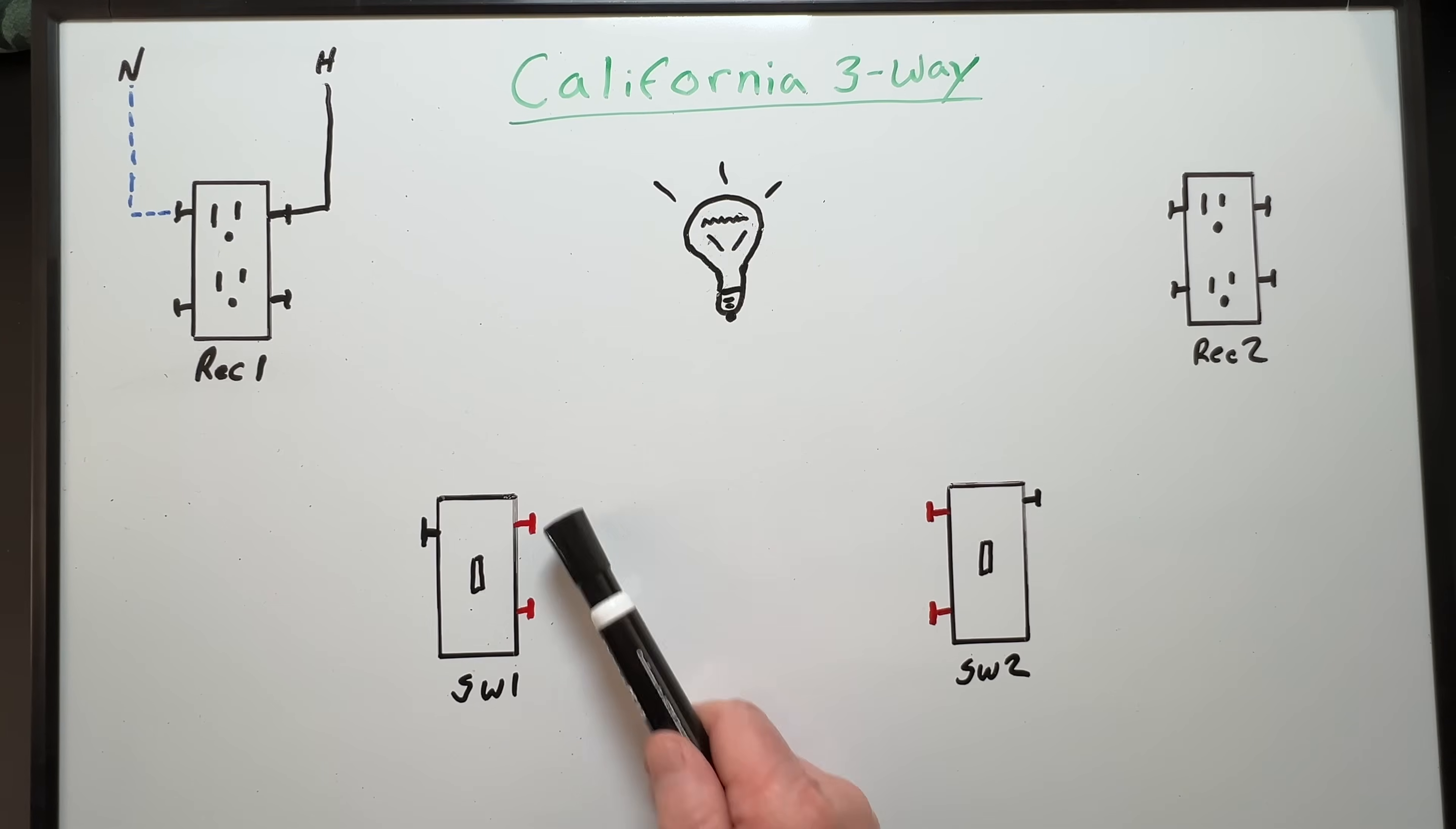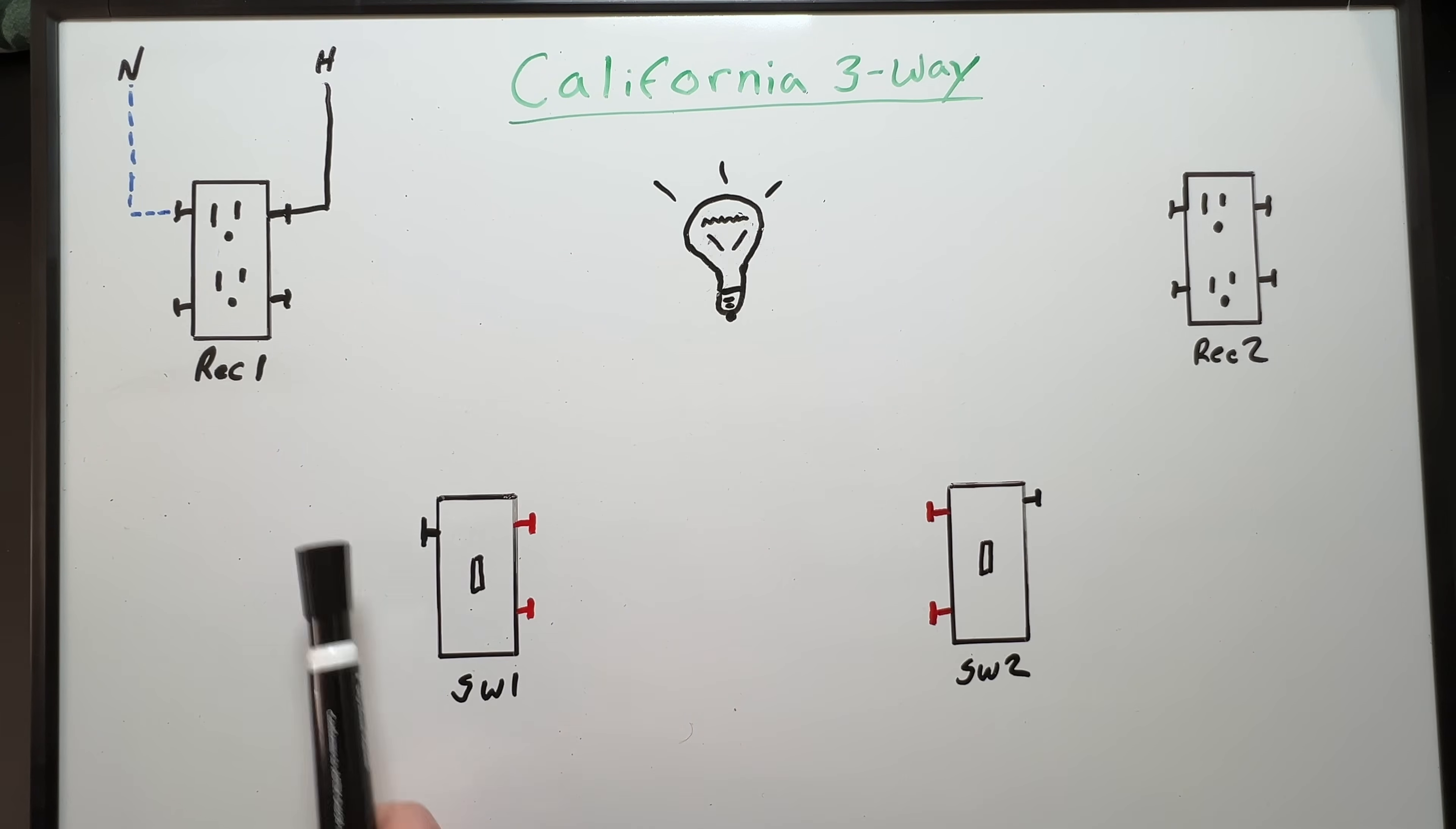Three-way switches have two gold screws for our travelers and one black screw for our common. But remember, this is not a standard three-way method. So these switches are going to be wired differently.